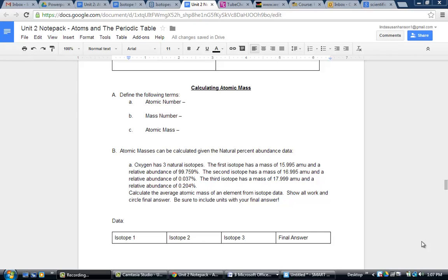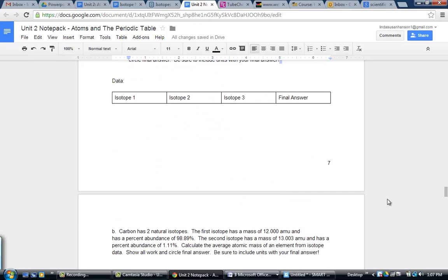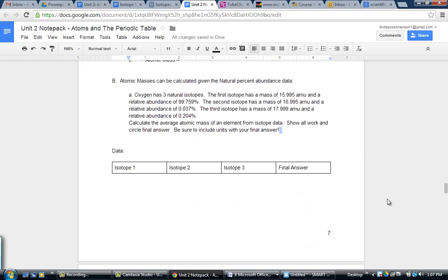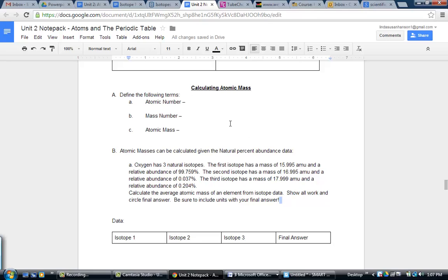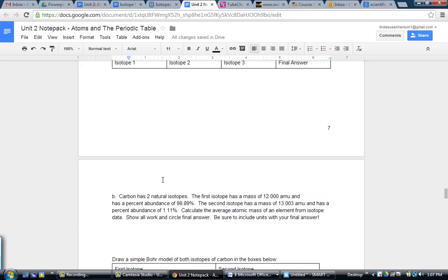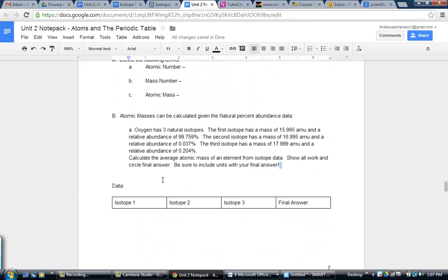Welcome. In our lesson today, we'll be practicing the skill of calculating atomic mass. We have our note packs out in front of us. The note pack opened up looks to be about page seven, where we left off in the previous lesson. We notice that we have three vocabularies that we will be defining, and then two practice calculations in which we will be using the natural percent abundance for isotopes to come up with what's called the atomic mass.